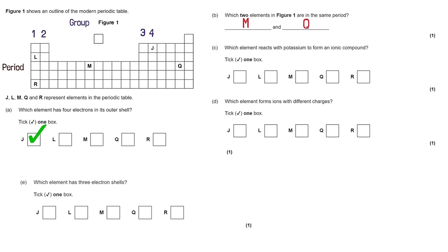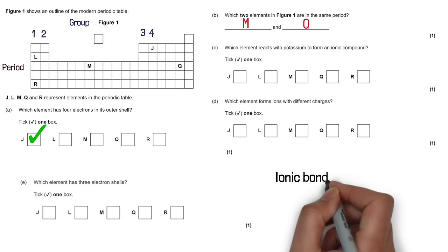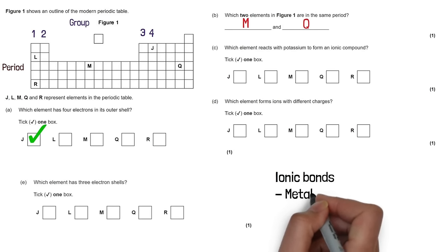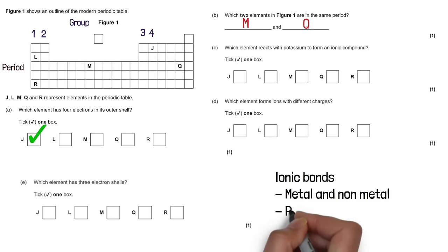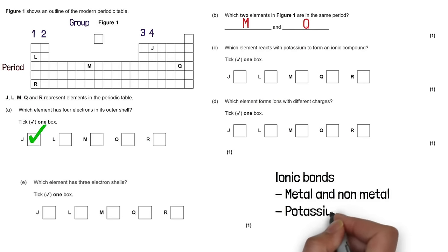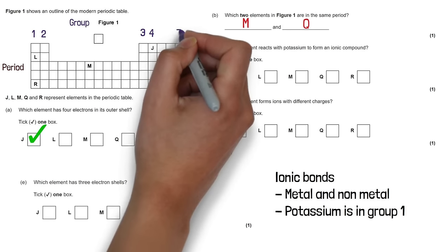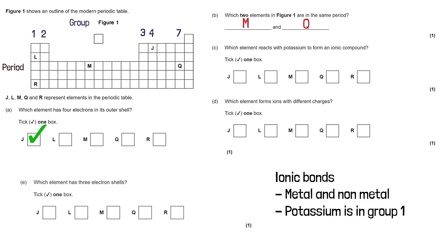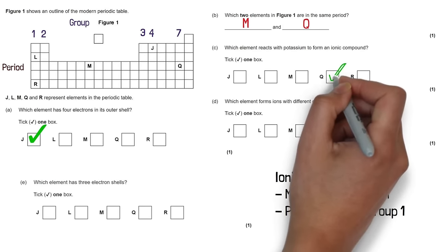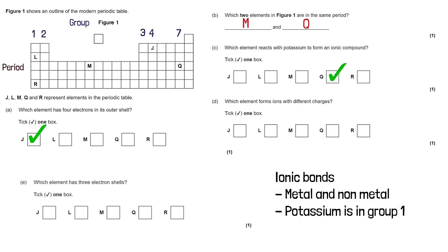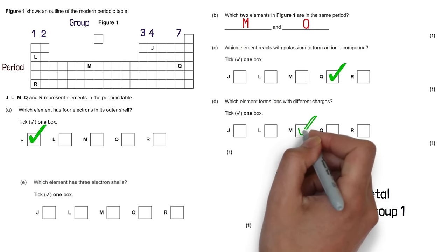Which element reacts with potassium to form an ionic compound? Ionic bonds are usually between metal and non-metal elements. Potassium is in group 1, and group 1 elements donate their electrons to group 7 elements, so the answer is Q. Which element forms ions with different charges? This is going to be M.